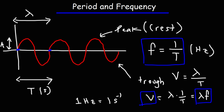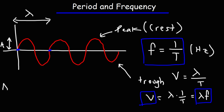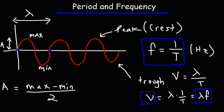If you want to calculate the amplitude and you know the maximum and minimum values, the amplitude is one half of the range: it's the max minus the minimum value, divided by two. That's how you calculate the amplitude of a wave.